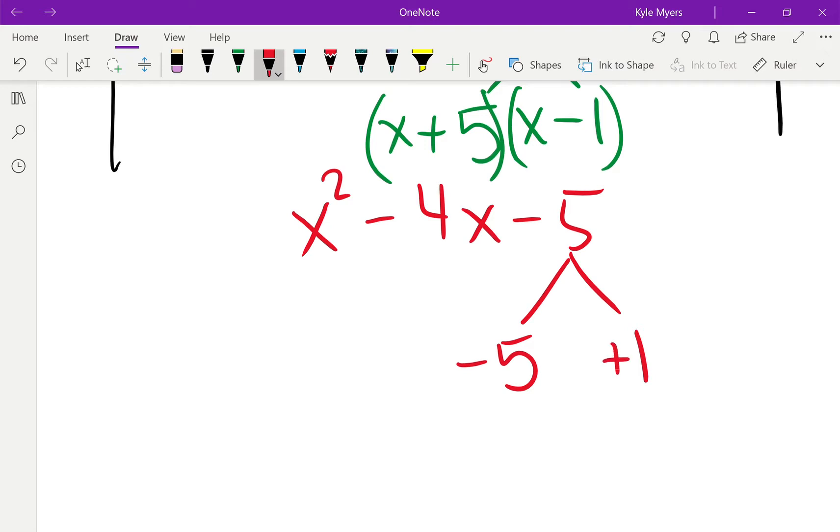Negative 5 plus 1 is negative 4, which is what we want. So, we found our factors, and all we do now is throw an x in front of each of them, throw some parentheses around it all, and we're done.